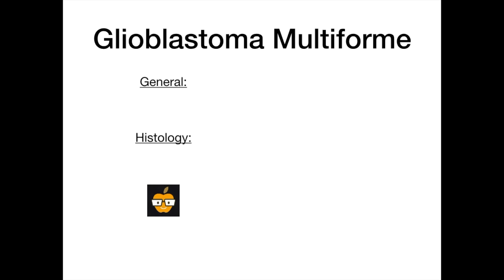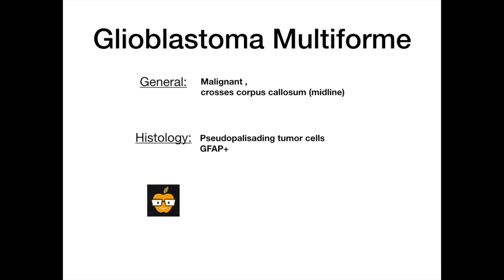We're going to get started with glioblastoma multiforme, our first tumor of adulthood. These are highly malignant tumors — very aggressive, very invasive. They tend to cross the corpus callosum, so they'll cross the midline when you see them on radiology, and this is pretty unique to this tumor.